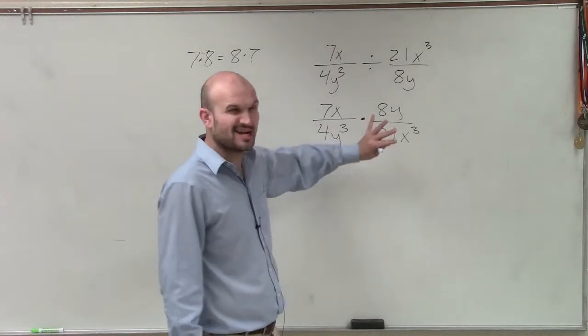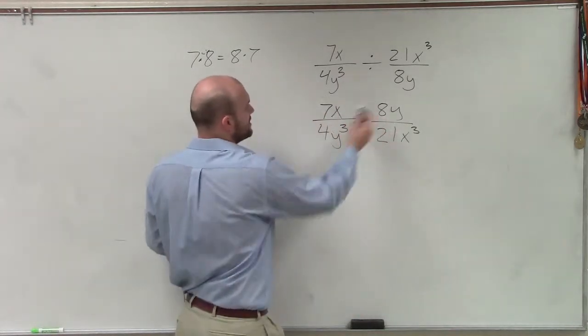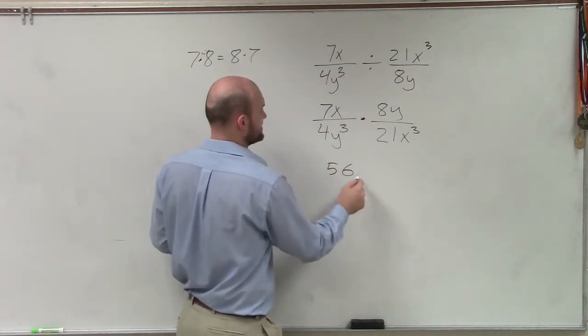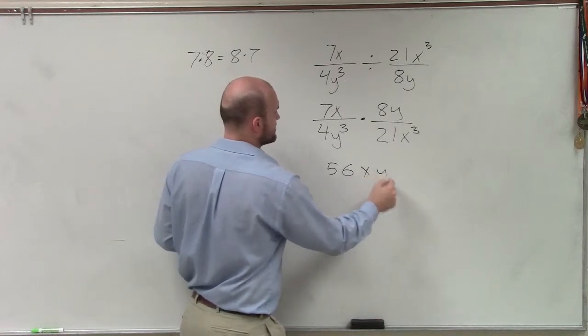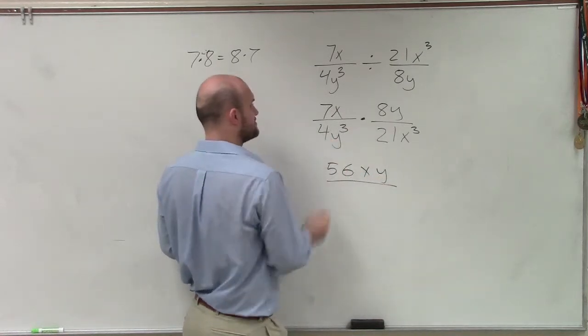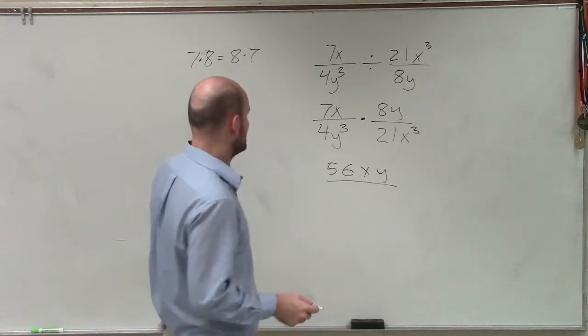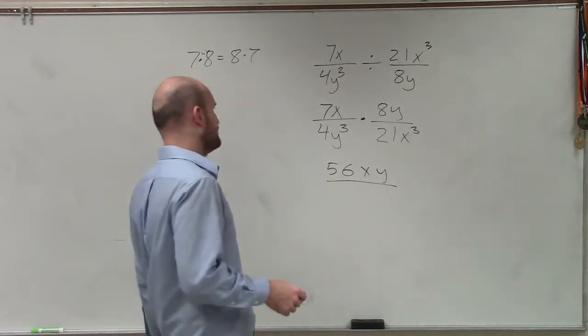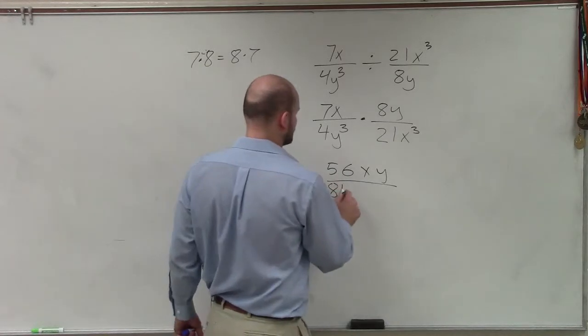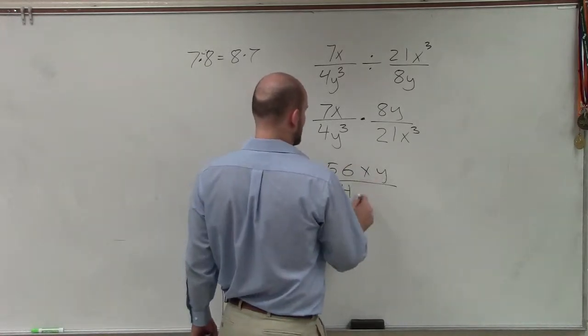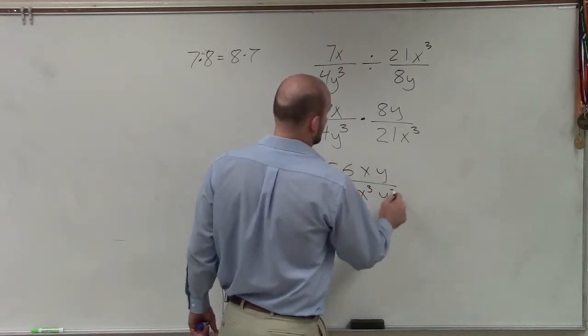Therefore, we have our variables at least under each other, and I'll multiply the numbers. So 7 times 8 is 56, and then I'll have x times y. And then 4 times 21, that's going to be 84. And that's going to be x cubed over y cubed.